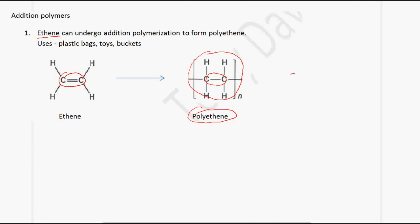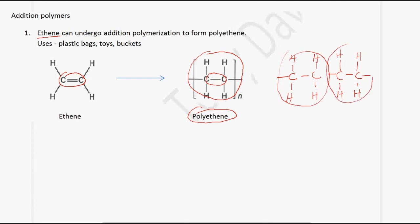If we had two repeat units, we would have one and two. The key thing to remember is that the double bond disappears and becomes a single bond. Examples of uses of polyethene include plastic bags, toys, and buckets.